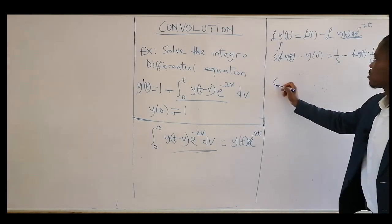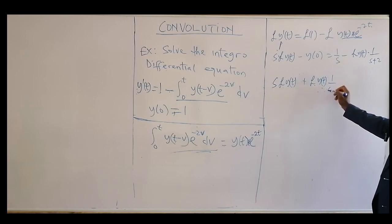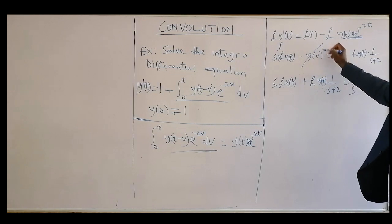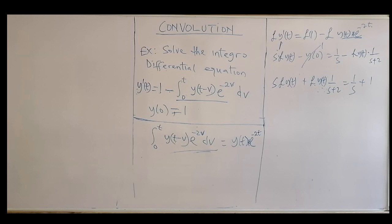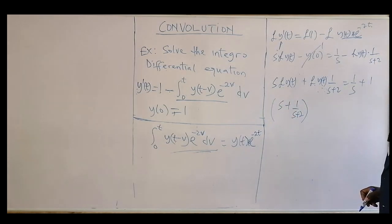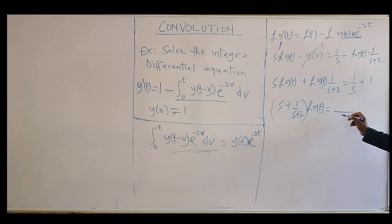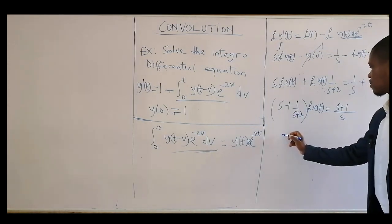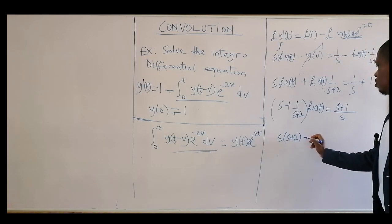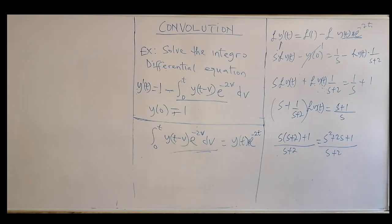Factorizing the Laplace of y(t), we get Laplace of y times [s + 1/(s+2)] equals (1 + s)/s. Combining terms, Laplace of y times (s² + 2s + 1)/(s + 2) equals (s + 1)/s. So Laplace of y = (s + 1)/s times (s + 2)/(s² + 2s + 1), giving (s+1)(s+2) over s(s² + 2s + 1).